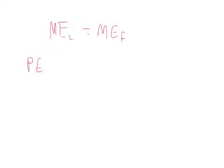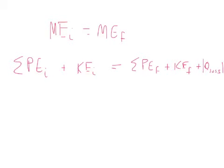So we have potential and kinetic at the start, and the same at the end. When there's friction we tack on Q_loss. Please remember: when there's no friction involved, you don't need the Q_loss term. What causes heat loss or energy loss? Friction. Q_loss is either given directly — if I say the energy loss due to friction is 20 joules, you just put 20 there — or you need to calculate it as force of friction times distance times cosine theta.